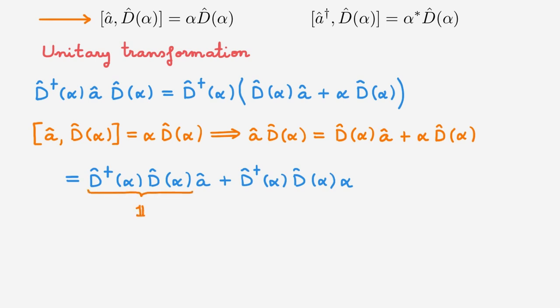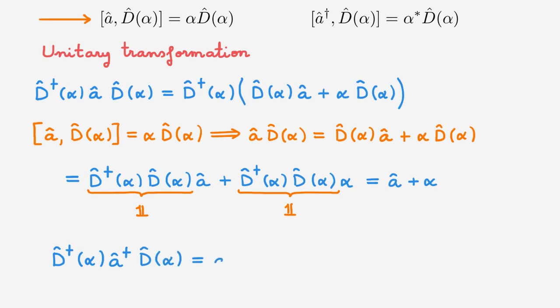As the displacement operator is unitary, D†D equals the identity in both products. Overall, we get A plus α. Using a similar derivation, the unitary transformation of the raising operator equals A† plus α*.